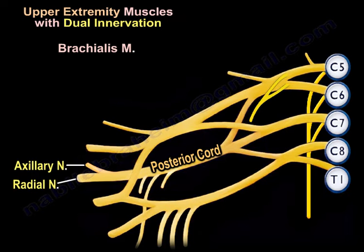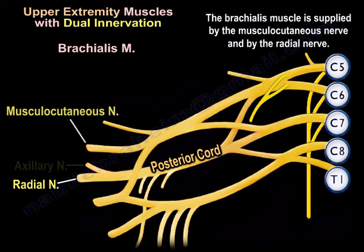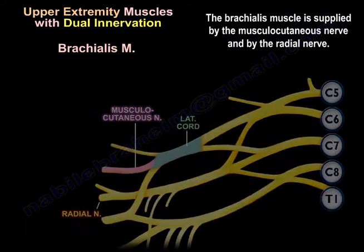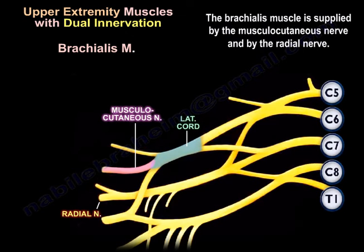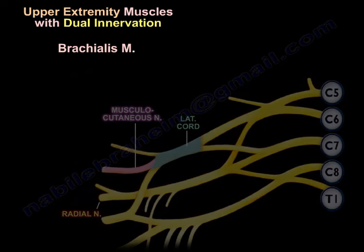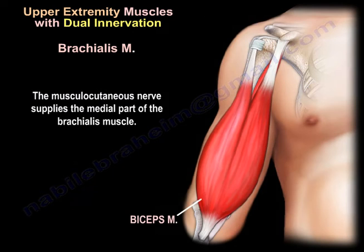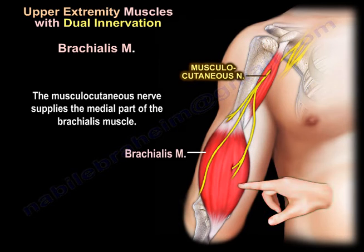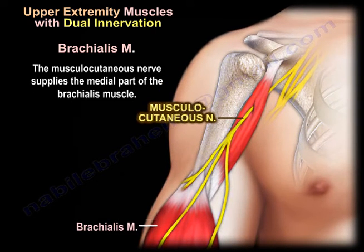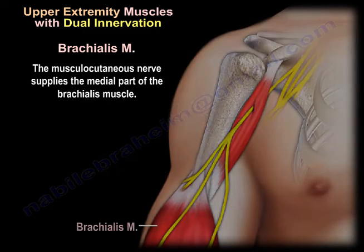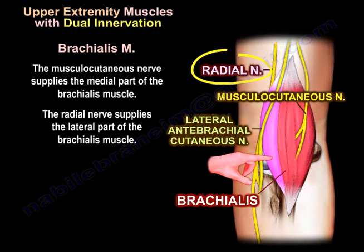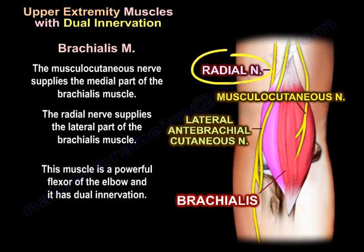The brachialis muscle is supplied by the musculocutaneous nerve and by the radial nerve. The musculocutaneous nerve supplies the medial part of the brachialis muscle, while the radial nerve supplies the lateral part. This muscle is a powerful flexor of the elbow and has dual innervation.